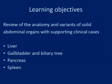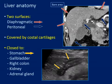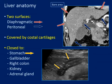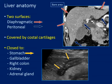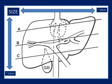Liver, gallbladder, biliary tree, pancreas, and spleen are the spectrum of what we want to see. The liver provides two surfaces: the diaphragmatic surface and the peritoneal surface. The liver is mostly covered by costal cartilages, which gives us some difficulties in seeing the whole liver in sonography. The liver is close to many organs — from the diaphragmatic part to the thorax, and to abdominal organs including the stomach, gallbladder, right colon, kidney, and adrenal gland.